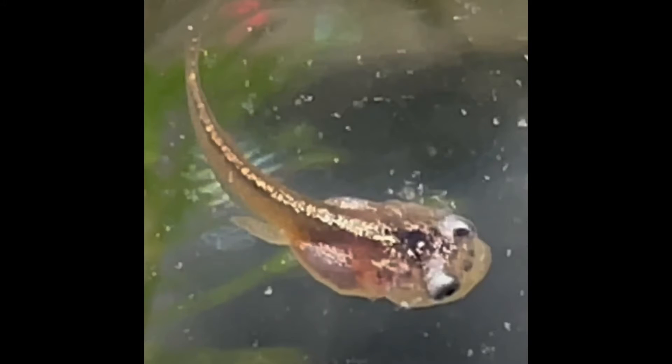You can see the little nubs on the back of their body, which are the beginnings of legs. Here they're lengthening a little bit, developing kind of a knee and getting longer.